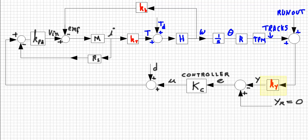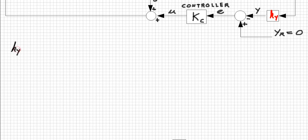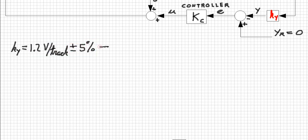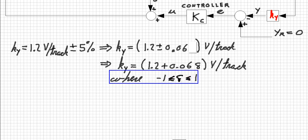For example, let's take the parameter KY, which describes our position sensor. From the paper this work is based on, we have that KY equals 1.2 volts per track, plus minus 5%. In other words, KY equals 1.2 plus minus 60 millivolts. We can rewrite the expression for KY without the plus minus sign as a nominal KY plus 0.03 times delta, where delta has all the variability of the parameter by defining it as any value between minus 1 and 1.